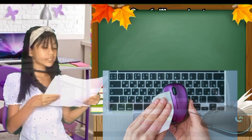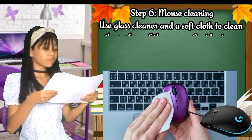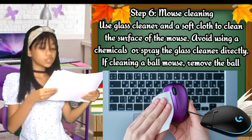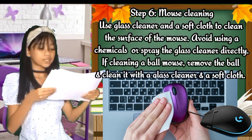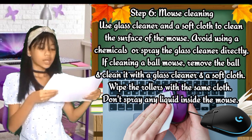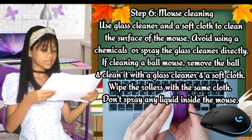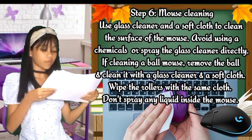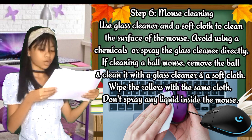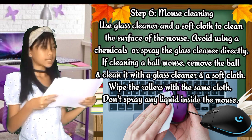For cleaning the mouse, use glass cleaner and a soft cloth to clean the surface of the mouse. Avoid using chemicals or spraying the glass cleaner directly. If cleaning a ball mouse, remove the ball and clean it with a glass cleaner and a soft cloth. Wipe the rollers with the same cloth. Don't spray any liquid inside the mouse.